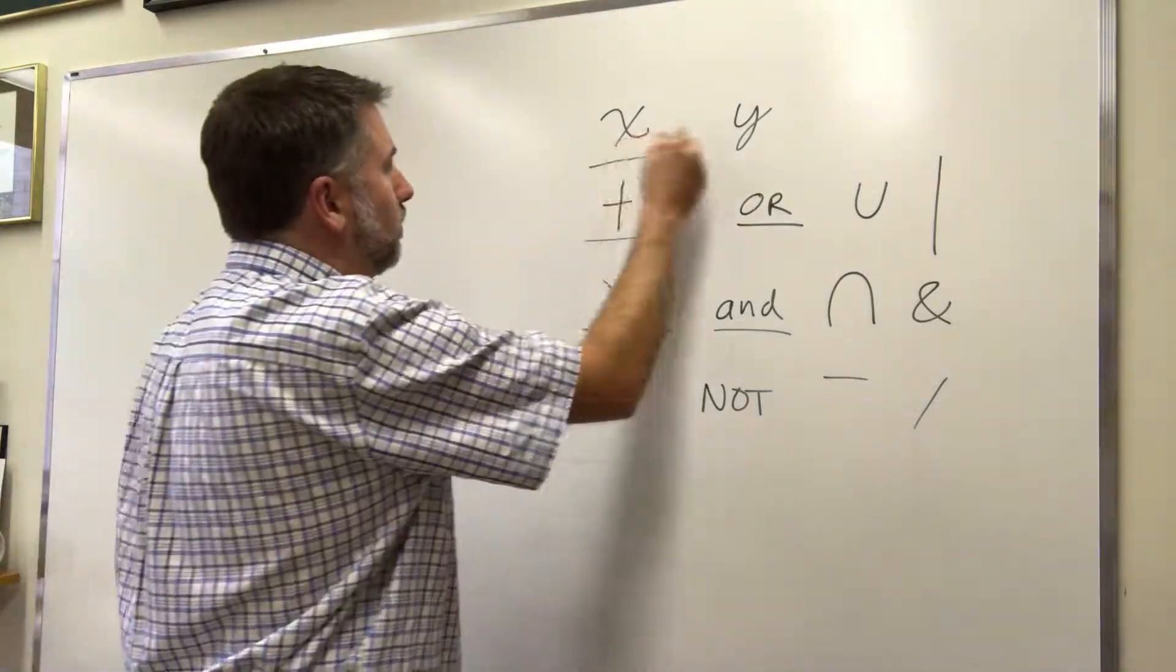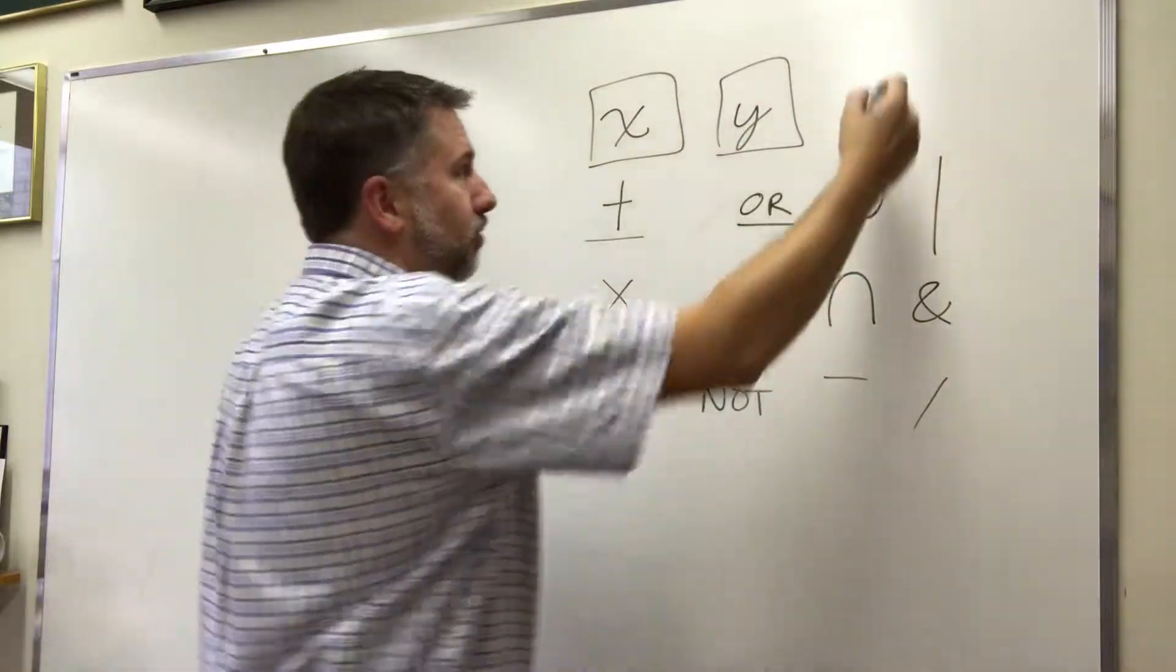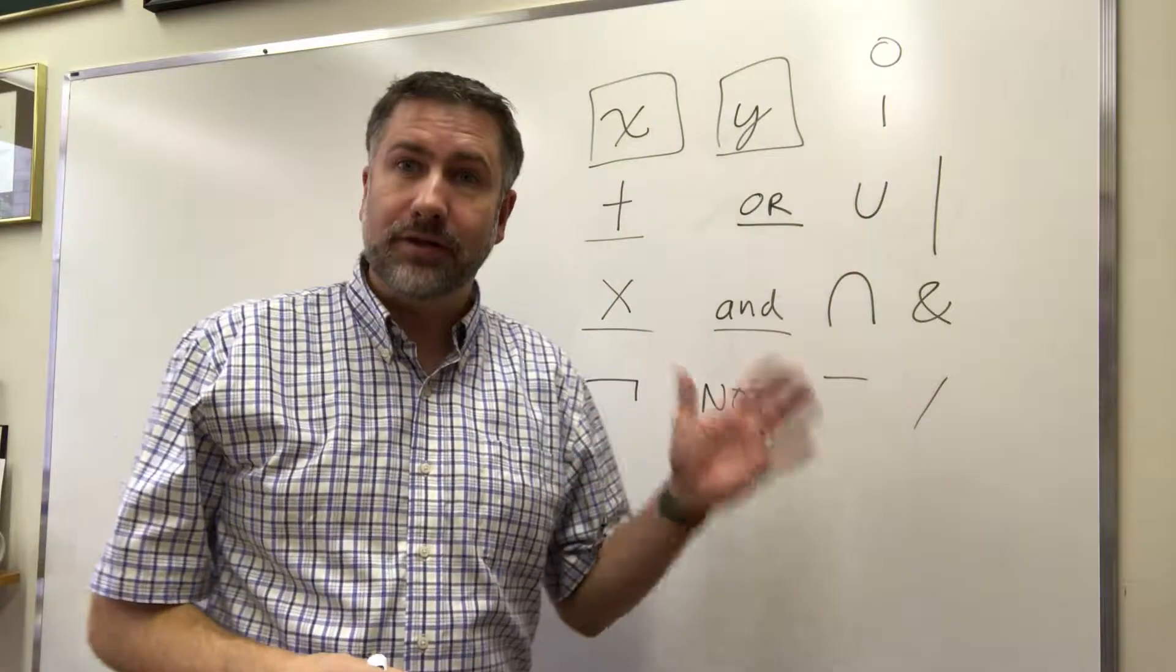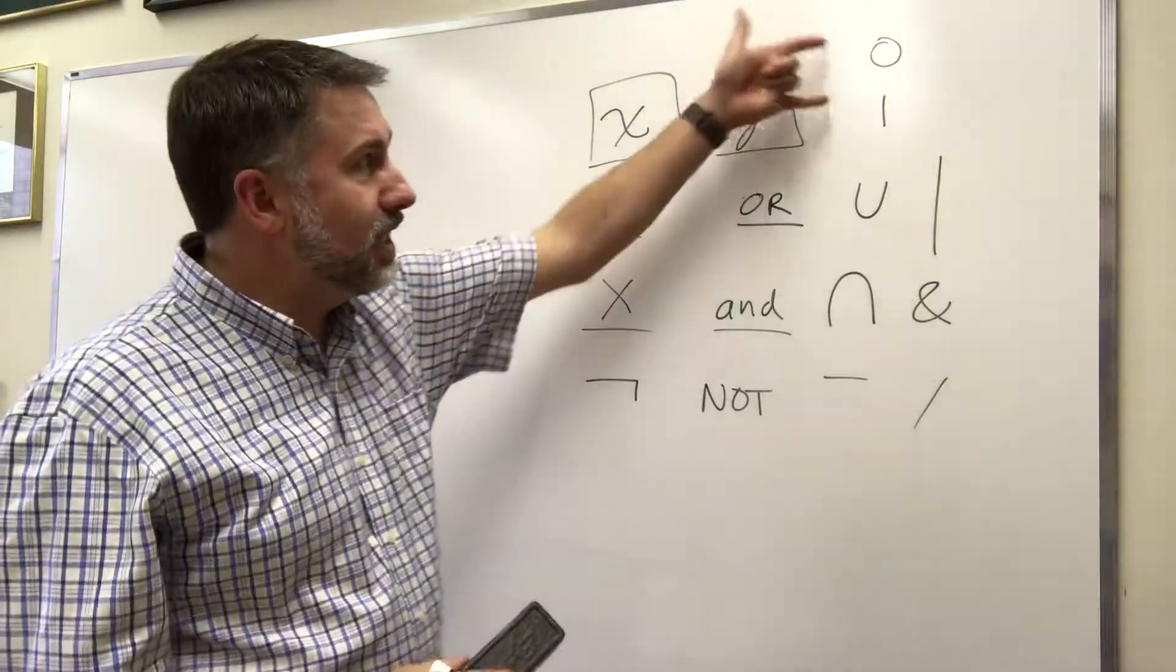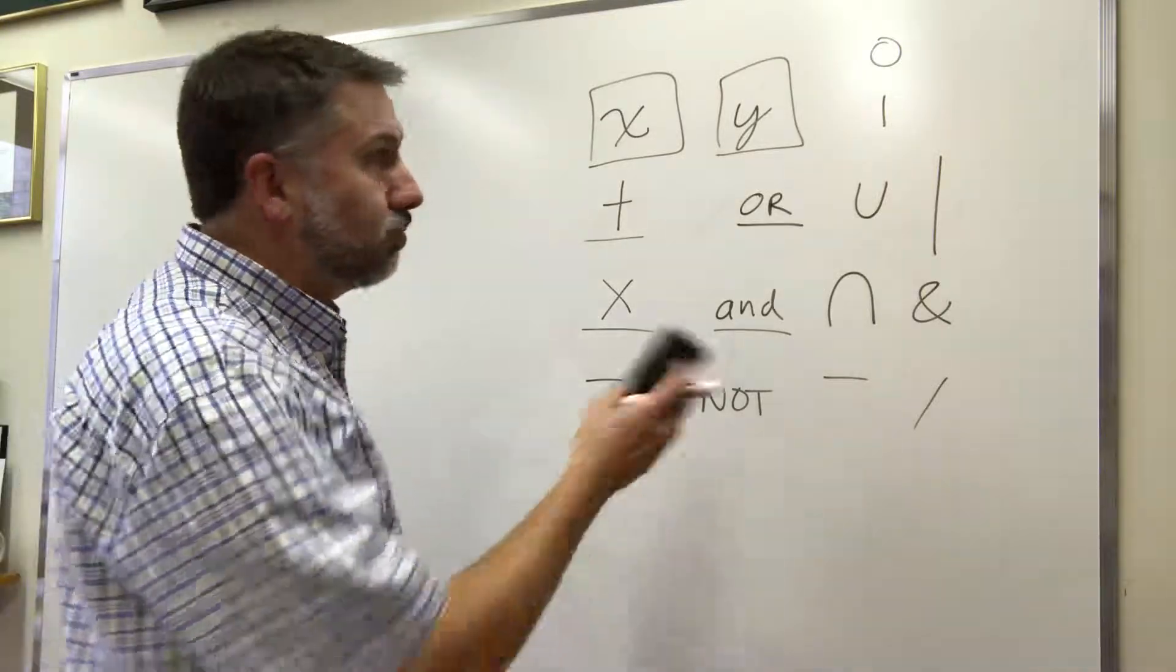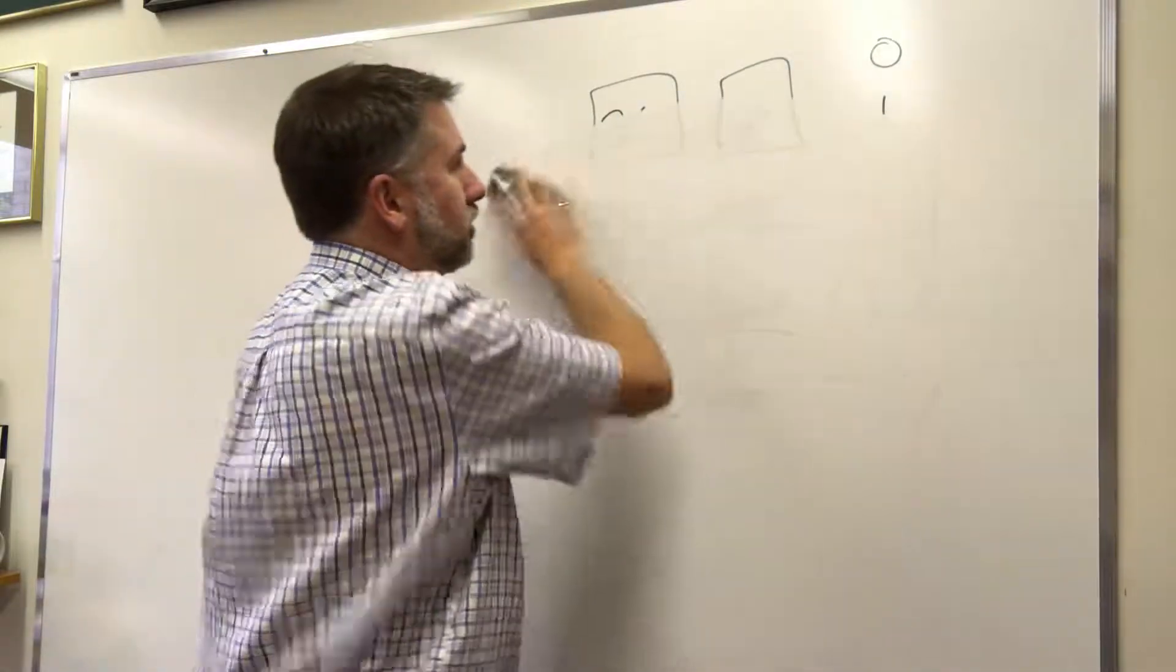These variables now, instead of taking any value, they can only be zero or one. These are the only possible values that these variables can take. And this is the main constraint which makes things a little bit difficult, a little bit different when we're dealing with Boolean logic versus dealing with traditional logic or algebra.